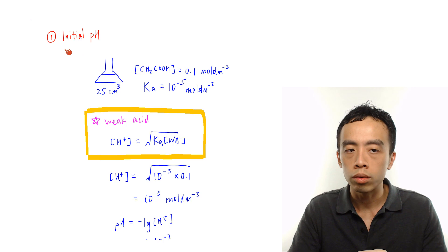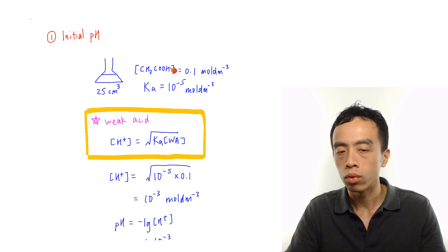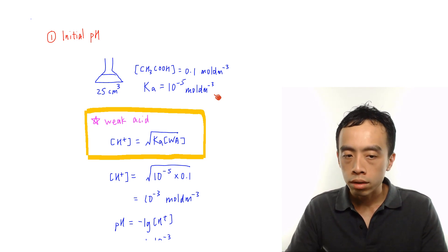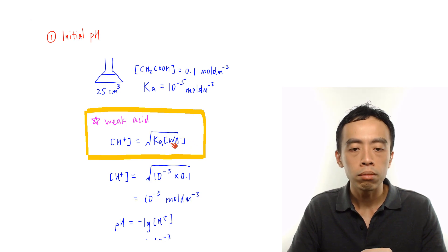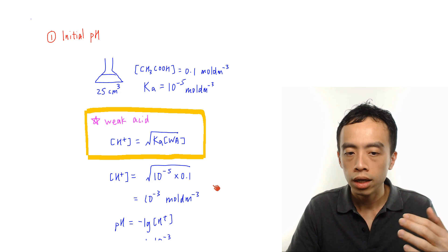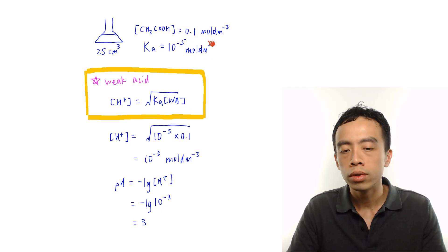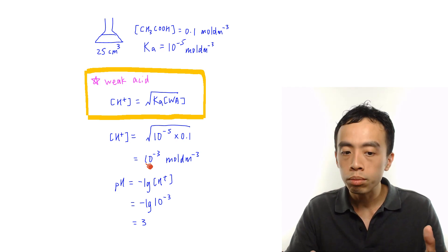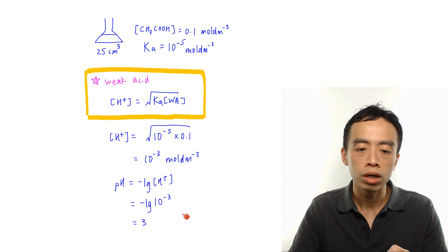The first point that we want to determine is our initial pH. Initial pH is just the pH of our weak acid, CH3COOH, before we start the titration. We have the concentration 0.1 mol per dm³ and the Ka value 10 to the power of minus 5 mol per dm³. We can apply this formula to determine the H⁺ concentration: H⁺ concentration equals the square root of Ka multiplied by concentration of the weak acid. So H⁺ concentration equals the square root of (10⁻⁵ × 0.1), which gives 10 to the power of minus 3 mol per dm³.